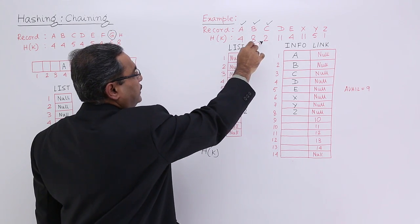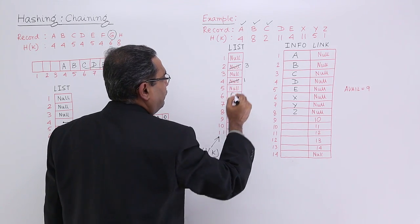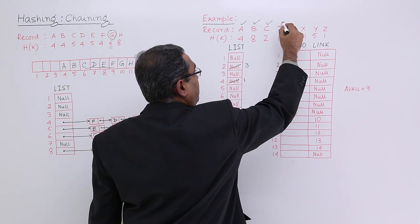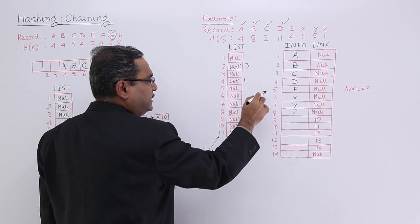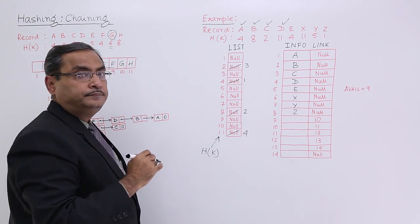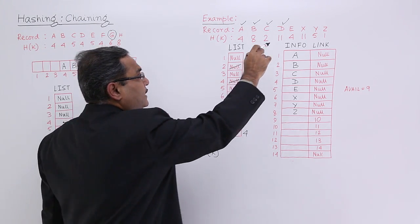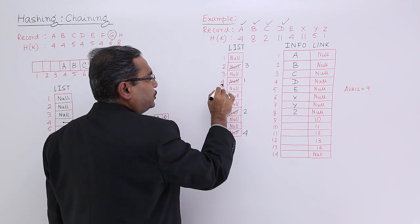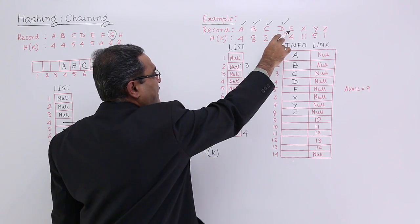Now D, 11. I shall get the address of D, which is 4. Now E is having h of k equal to 4. I am coming to the fourth location. It is not null, it is 1. This E, that means one linked list is existing.